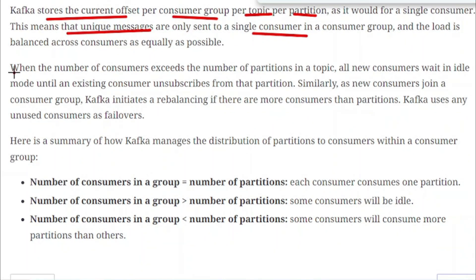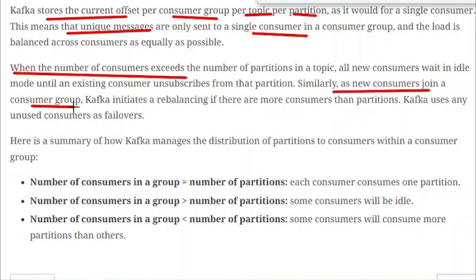When the number of consumers exceeds the number of partitions in the topic, all the new consumers wait in idle mode until existing consumers unsubscribe from those partitions. When the number of consumers exceeds the number of partitions, some consumers have to wait until others unsubscribe. When a new consumer joins the consumer group, Kafka initiates a rebalancing.